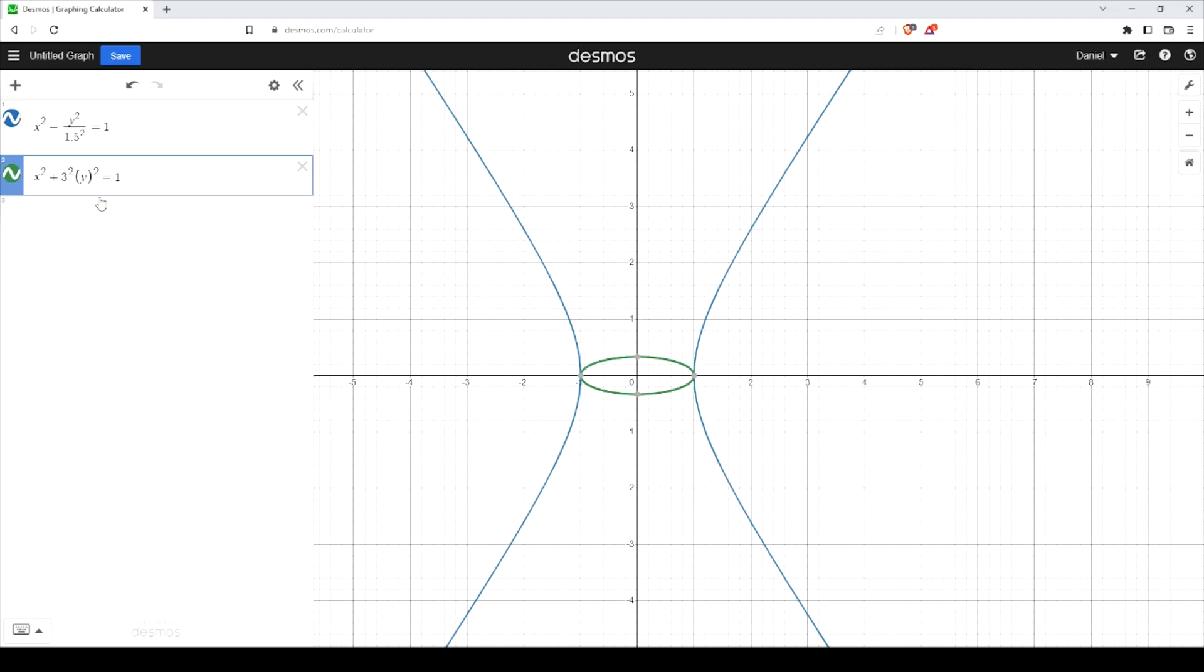So I'm going to do a vertical compression by a factor of three. And I want to move it up by 2.65. And I want them to have a radius, or an overall radius, of two.